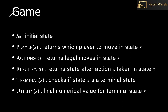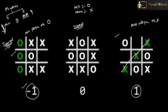Now let us discuss a few terminologies in game. There is basically an initial state. The player function returns which player to move in state s — whether X or O, min or max player. Actions returns legal moves in a state s — what possible actions can AI or any person take. Result returns the state after an action is taken. Terminal checks if a state is a terminal state — that is our goal state, the final state where someone wins or loses. Utility is the final numeric value for the terminal state — minus 1, 0, or 1.